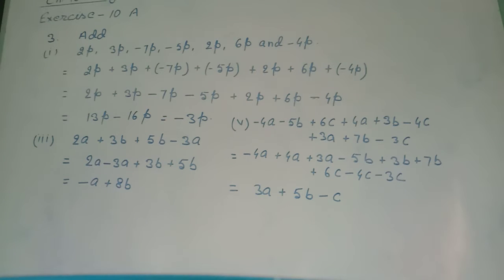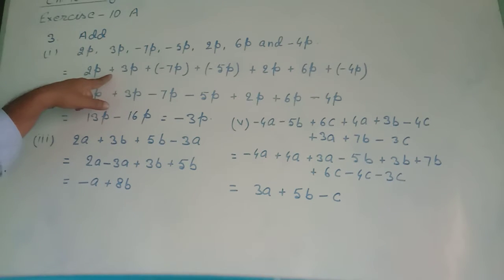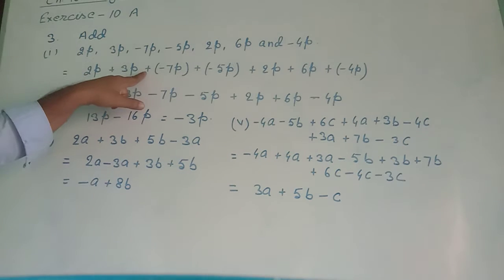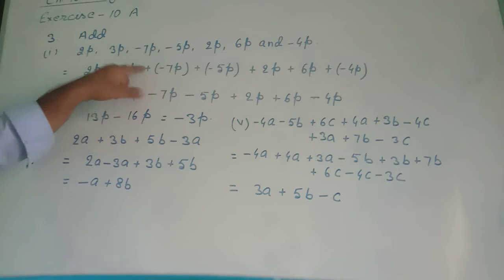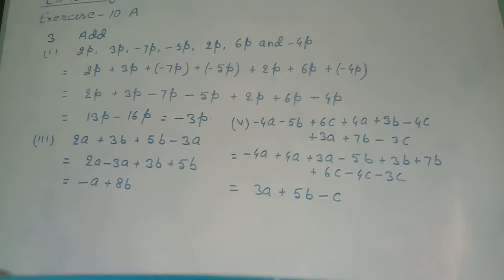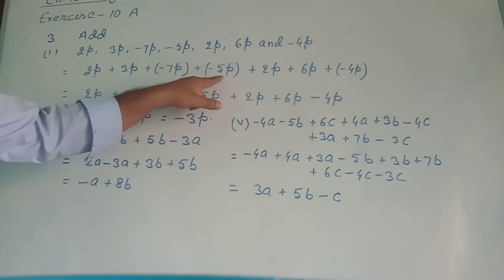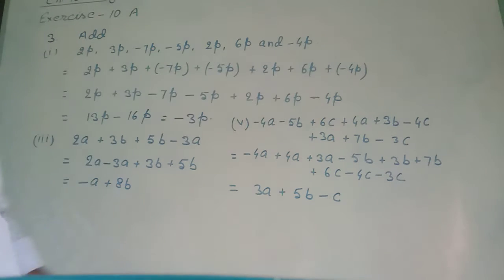In all the terms the variable is the same, that is p. So all became like terms. To add, we give the plus sign: 2p plus 3p plus (minus 7p) plus (minus 5p) plus 2p plus 6p plus (minus 4p). Two signs should not be written together, so the negative terms are enclosed in small brackets.